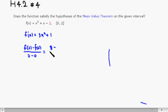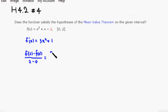Hold on a sec. This was 8 minus f of 0 which is negative 2, over 2, which is 10 over 2, so it's 5.